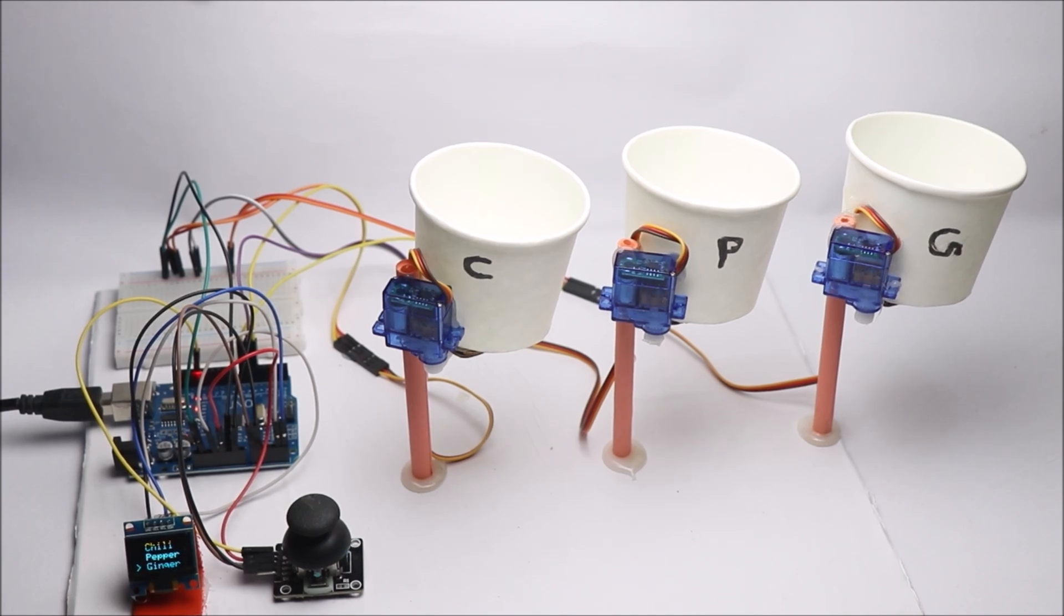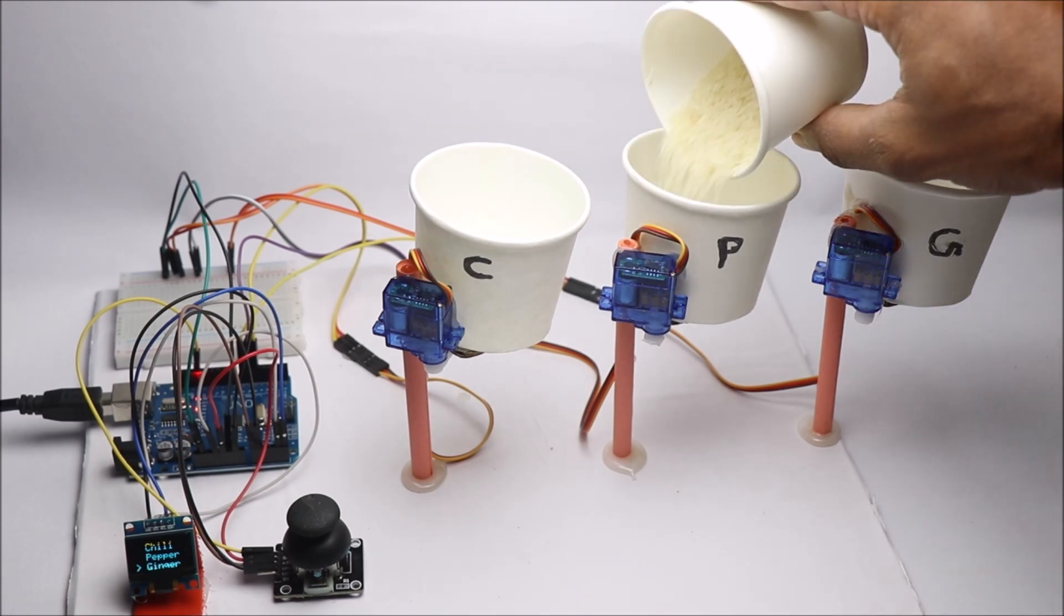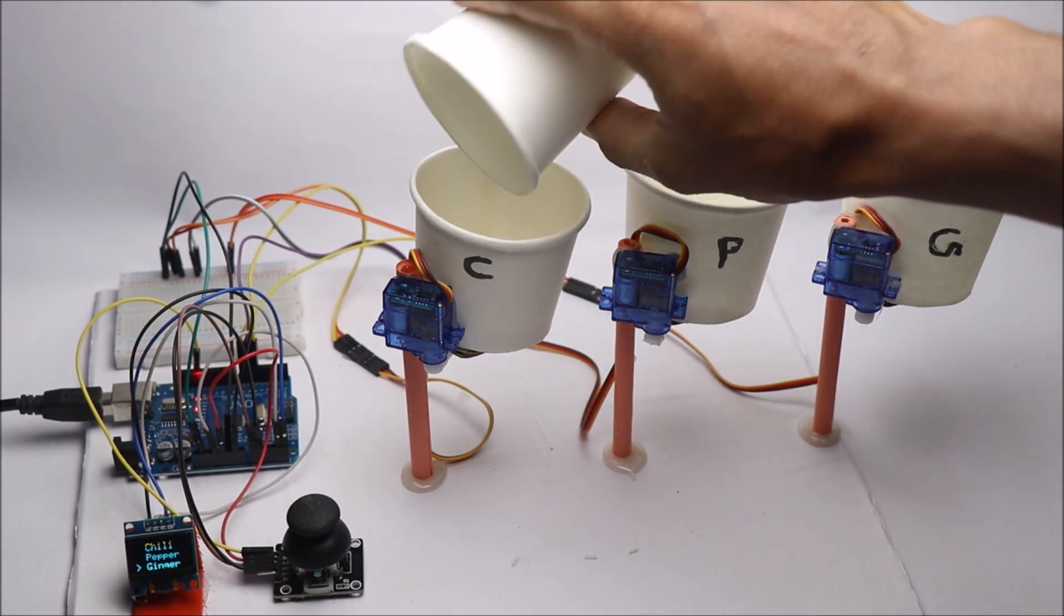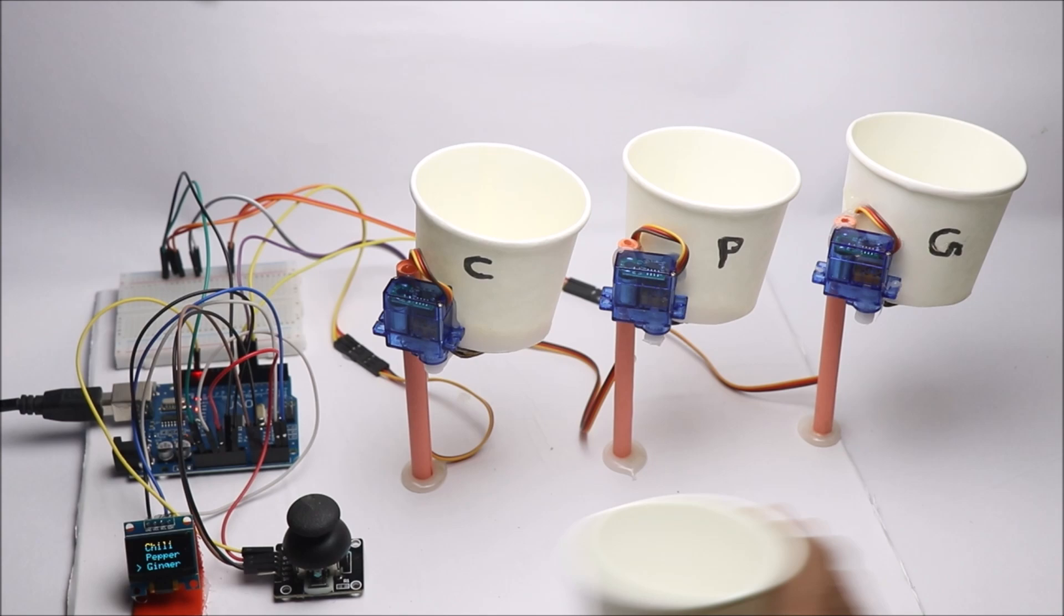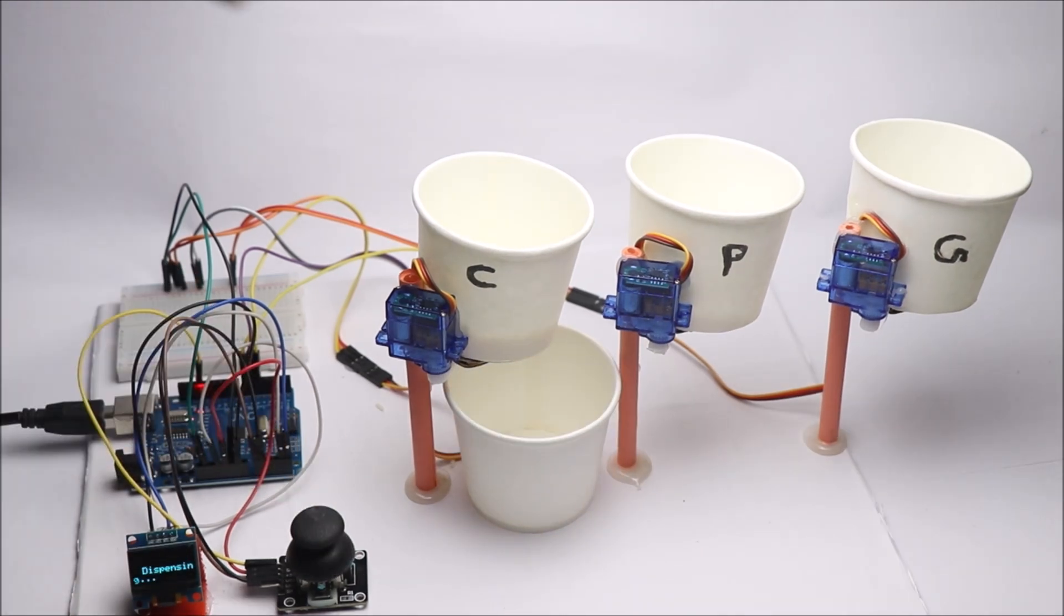To make it easier for you to understand, I will name the holders C, P, and G. When I press on the respective menu from OLED screen, the dedicated servos will be activated, thus dispensing the food.